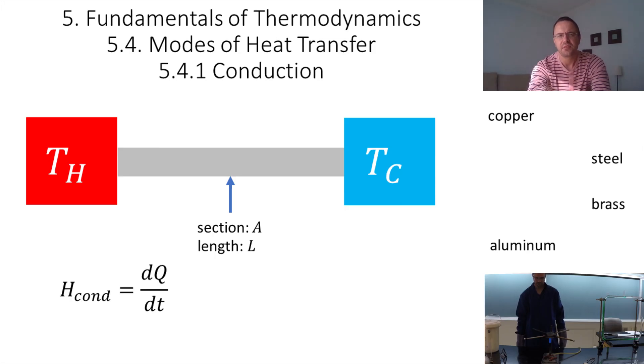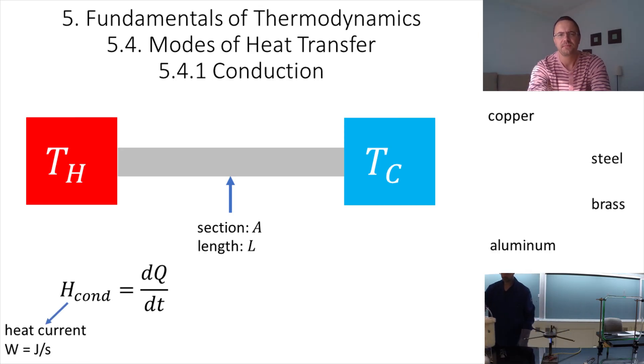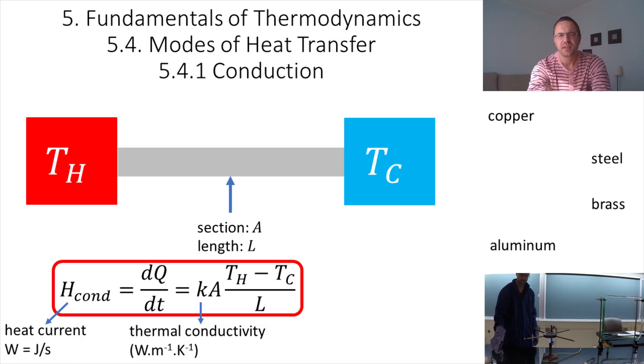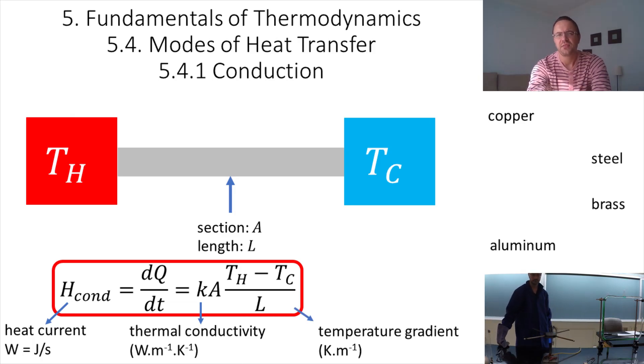The heat current represents the flow of energy per second and has units of joules per second or watts. The heat current equals k times A times (TH minus TC) over L. In this equation, k is the coefficient of thermal conductivity, a number in watts per meter per kelvin. And ΔT/L is the temperature gradient in kelvin per meter.